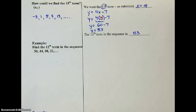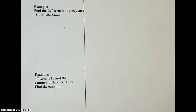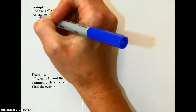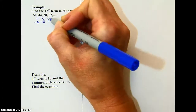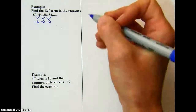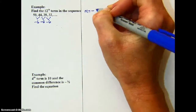Let's try this again from the beginning. We have a new pattern and we want to know the 12th term. First, let's check that it's a linear pattern — that we're adding or subtracting the same number each time. If I subtract 6, I get 44. Subtract 6 again, I get 38. Subtract 6 again — yes, it's a linear pattern. The common difference, or slope, is negative 6.